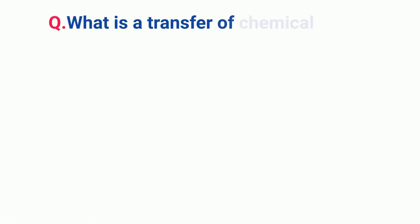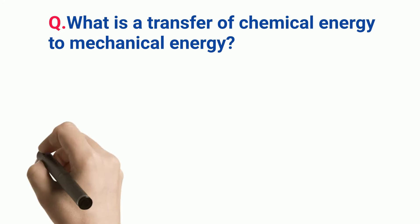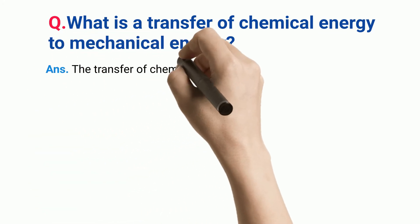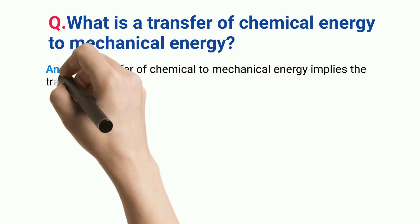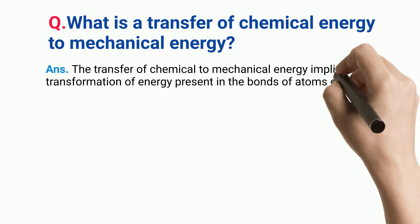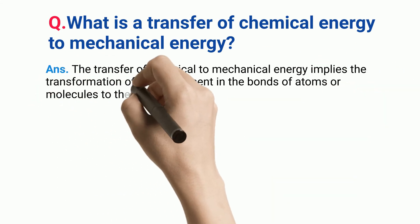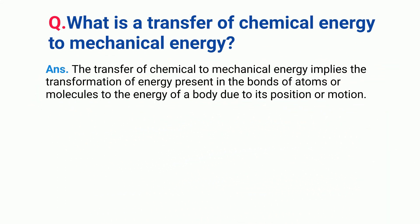What is a transfer of chemical energy to mechanical energy? The transfer of chemical to mechanical energy implies the transformation of energy present in the bonds of atoms or molecules to the energy of a body due to its position or motion.